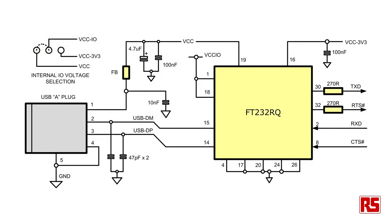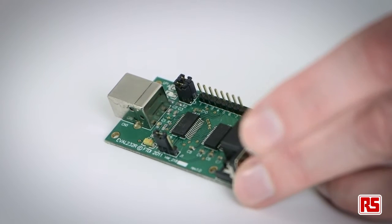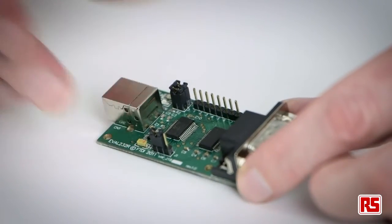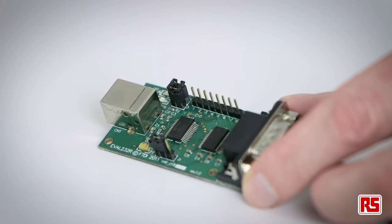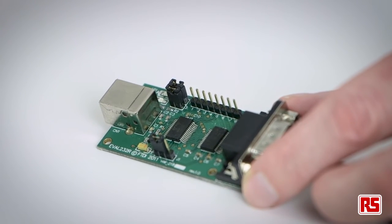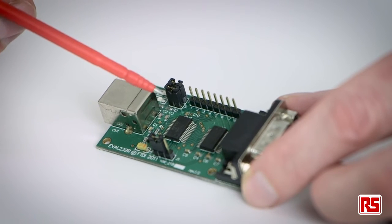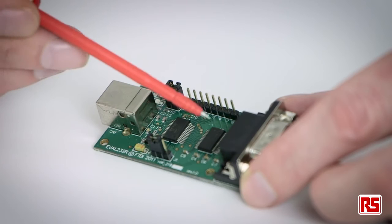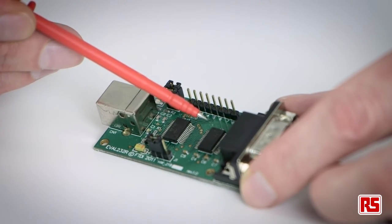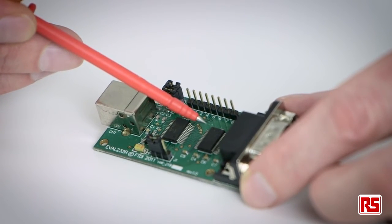In this case it is USB bus powered. If we have a look at the schematic you can see that pin 1 is connected to the 5V supply from the USB connector on the laptop. With the addition of a level shifter we can upgrade the UART signals to RS422, RS485, and RS232 levels. You can see on this module we have the 232R chip and a level shifter chip giving us the RS232 levels on the DB9 connector.